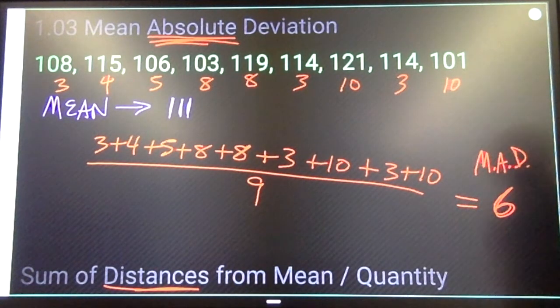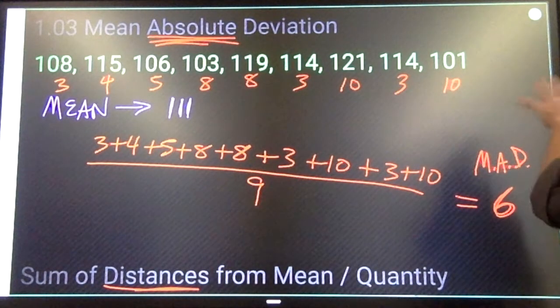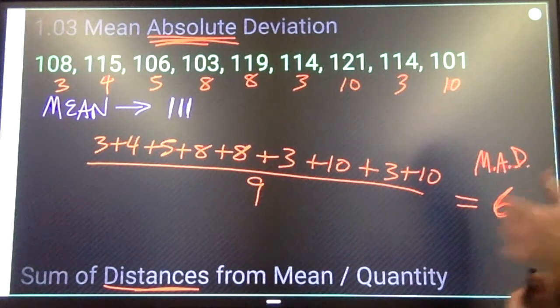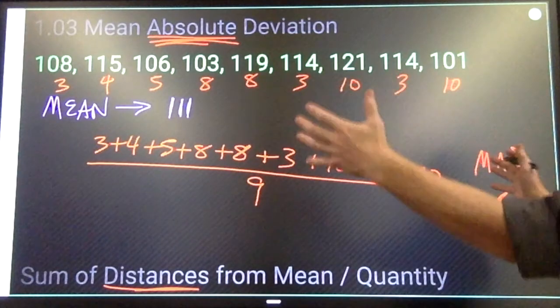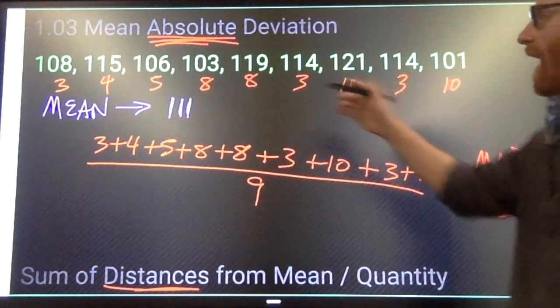That is the mean absolute deviation. What it tells us - this is actually another measure of dispersion - it tells us that the numbers tend to be on average within six spaces of 111. The average number is six away from the mean. That's the information that's given us.